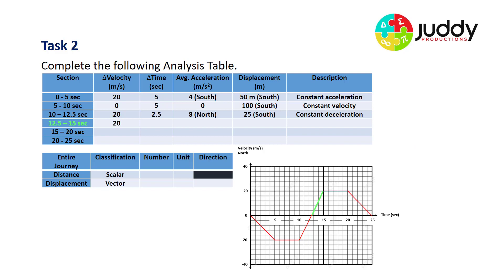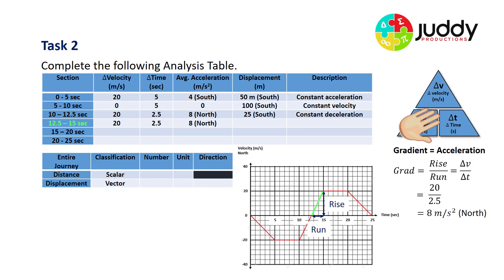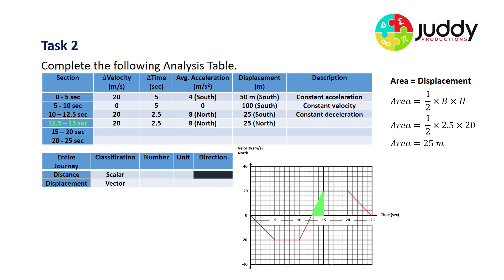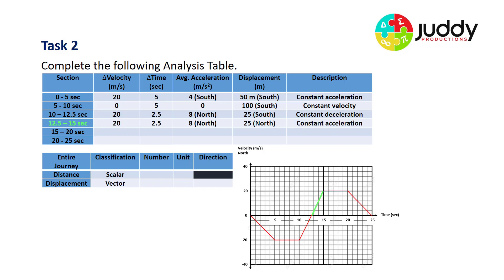The next section, from 12.5 to 15 seconds: change in velocity again of 20. We start at zero and climb to 20 meters per second north in 2.5 seconds. That gives a gradient of 20 divided by 2.5 — 8 meters per second squared north. Displacement is 25 meters north, since the area is above the x-axis. This is constant acceleration in the northerly direction.